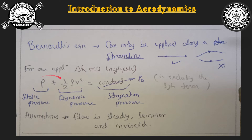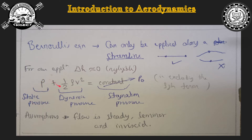For our purposes, the delta h is not very much, so we neglect the potential energy term. What remains is P plus half rho v squared equals a constant. Here, P is called the static pressure — the pressure exerted without any motion. The term half rho v squared is called the dynamic pressure, created by the very flow of air particles. The summation of static and dynamic pressure is a constant called the stagnation pressure.